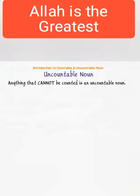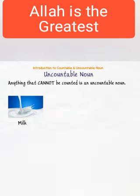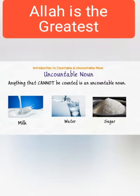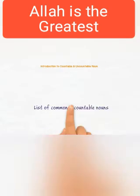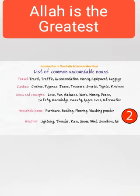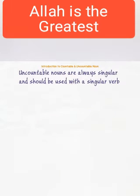Anything that cannot be counted is an uncountable noun. Can we count milk, water, and sugar? No, we cannot count these, so they are called uncountable nouns. Uncountable nouns are always singular and should be used with a singular verb.